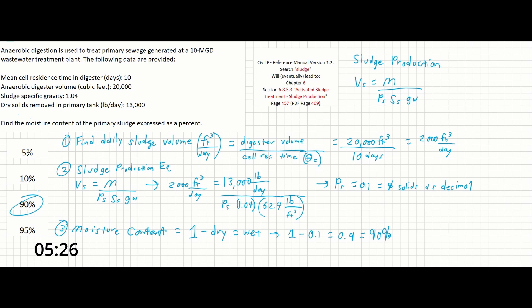That's all it takes to solve this problem. You need to know the sludge production equation, which we found in the reference manual. Before you begin to use it, you need to find the daily sludge volume by using the digester volume and the residence time provided. Calculating for the sludge production, we can use the remaining terms up here. And finally, we have to subtract the dry from the total to get the wet.